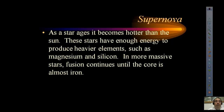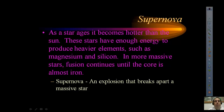As a star ages, it becomes hotter and more unstable. Stars have enough energy to produce heavier elements — the sun's fuel is hydrogen fusing into helium, our two lightest elements. Hotter stars produce heavier elements like magnesium and silicon. In more massive, unstable stars, fusion continues until the core reaches iron, a very dense element. This instability leads to a supernova — an explosion that breaks apart a massive star.